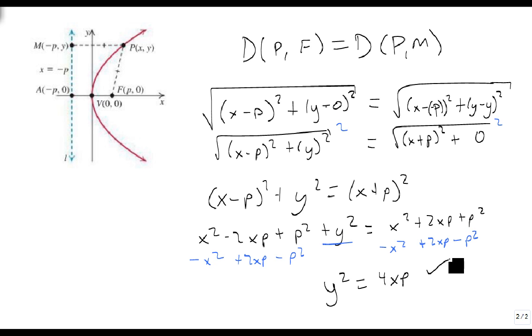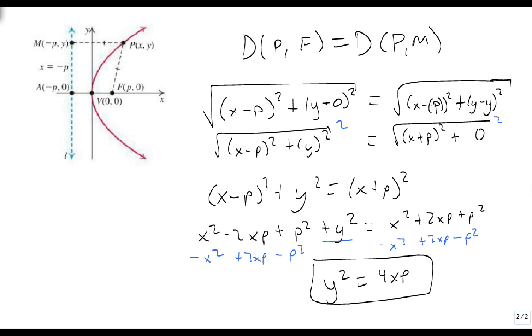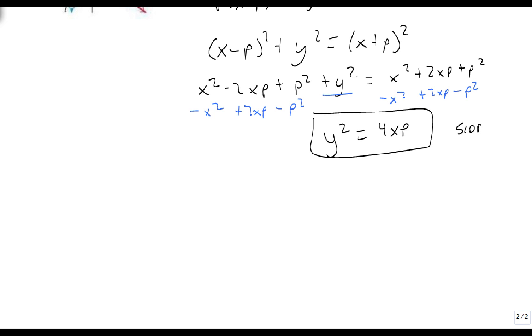And so this is where that standard form equation and the definitions came from. And I want to make one thing very clear. We could do the same thing if we termed this as an up-down one. It would just swap which variable is still squared. So this means that it's a side-to-side version. And if I have x squared equals 4yp, then this is going to be an up or down one. But these are the two standard forms, and this is where the equation comes from.